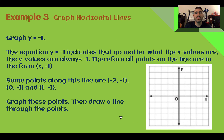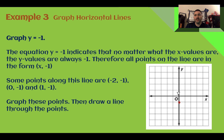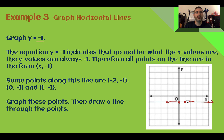Example 3: Graph horizontal lines. Graph y equals negative one. When we see an equation like this, it means no matter what the x-values are, y is equal to negative one. So I'm going to plot my y-intercept at negative one. If I plugged in negative two for x, it's multiplied by zero, I still get negative one. If I plugged in one, five, or any value, I'd still get negative one. So no matter what, it's at negative one. This is a horizontal line along negative one.